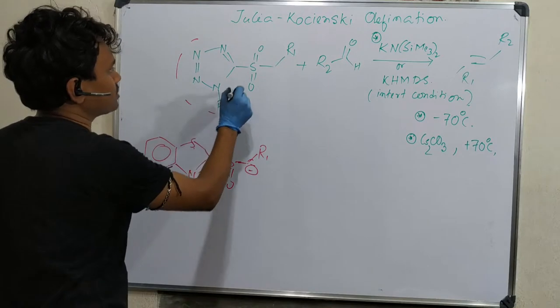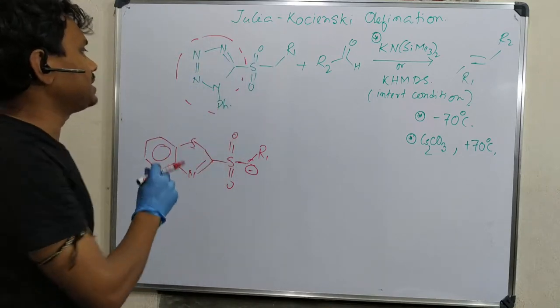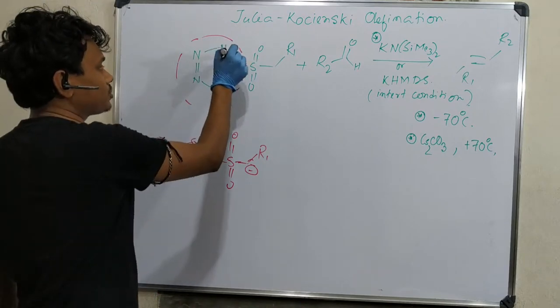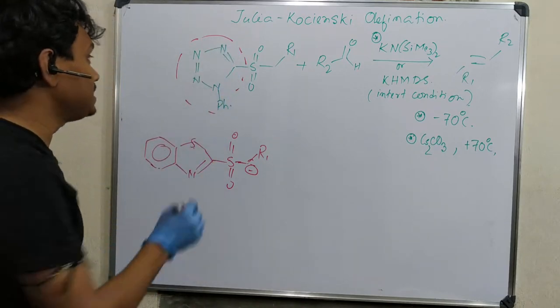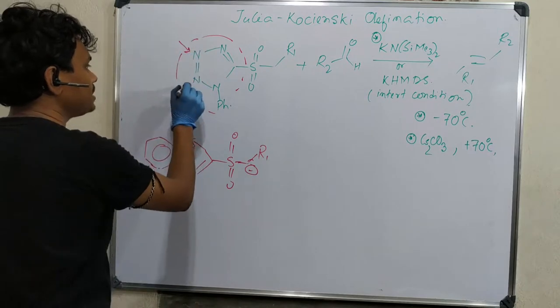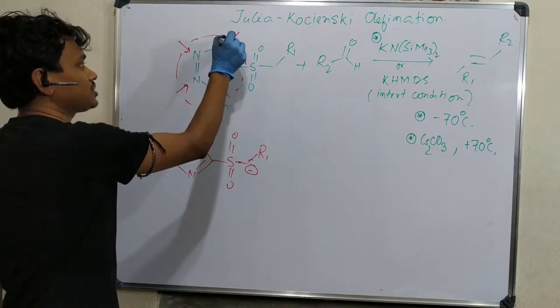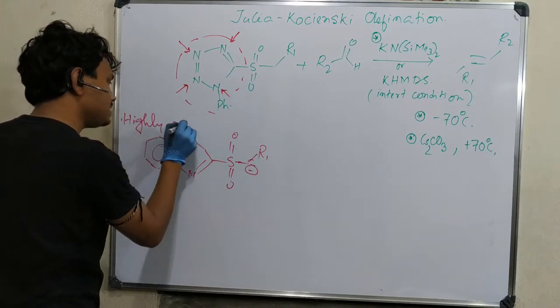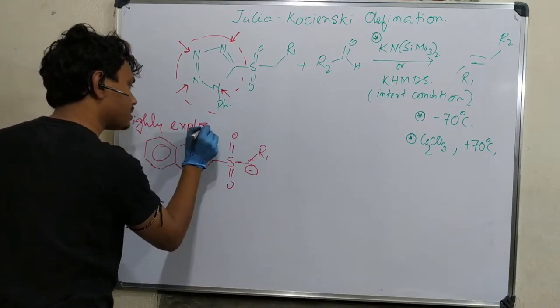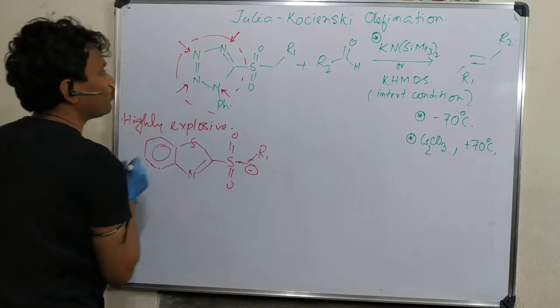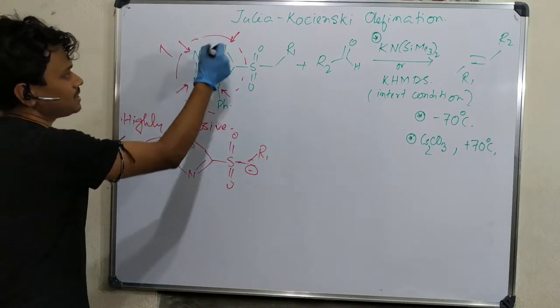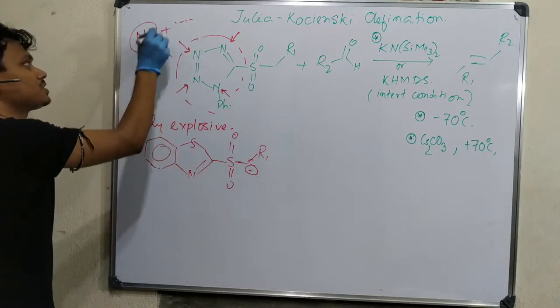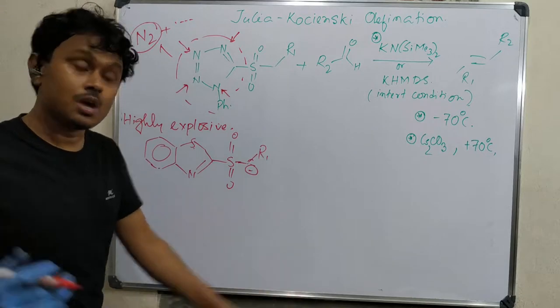Before going through details, I want to give you a little understanding about tetrazole. It contains four nitrogens in a five-member ring - please keep in mind, four nitrogens in a five-member ring. Such tetrazole molecules are highly explosive. Care must be taken while handling this. This molecule can produce two molecules of nitrogen and other products, and nitrogen is a very stable molecule that will come out.